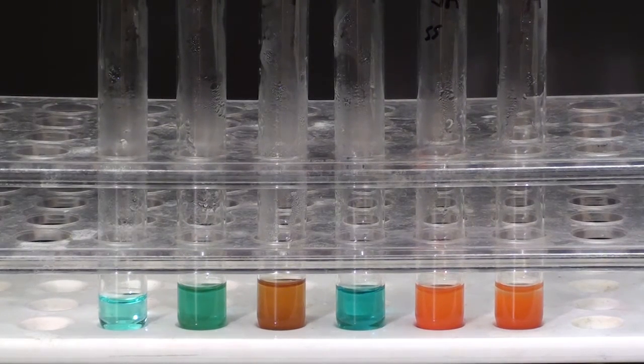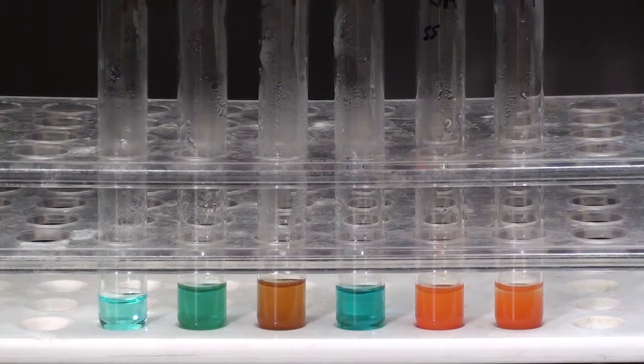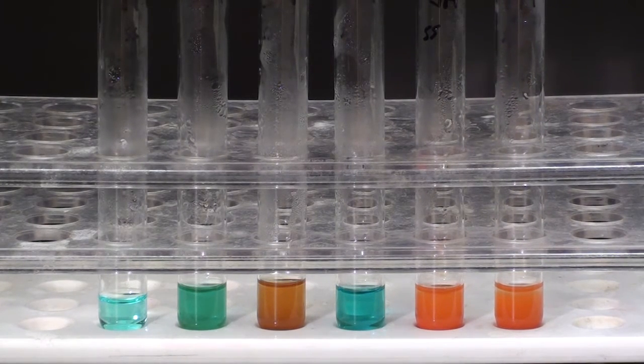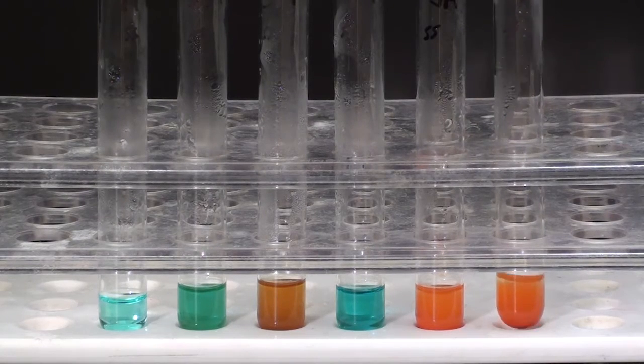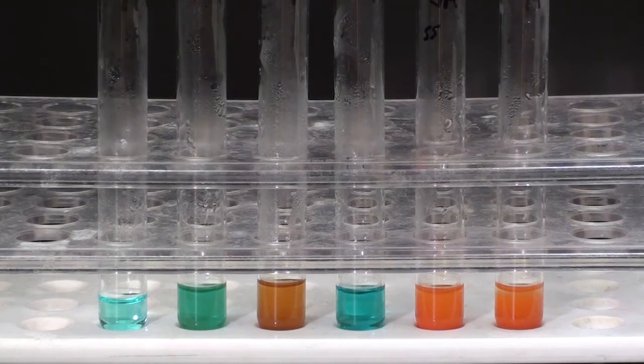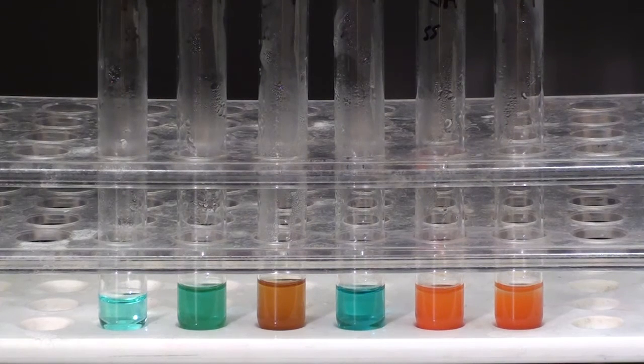Test tube six was enzyme and starch left at zero degrees centigrade for 30 minutes. But the explanation for why sugar is present is that enzyme and starch were at room temperature when they were put into the cold.